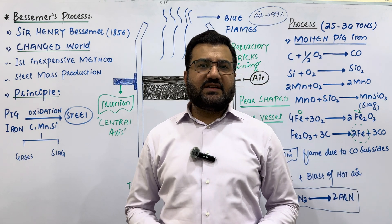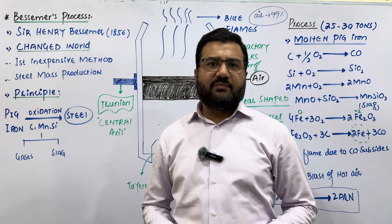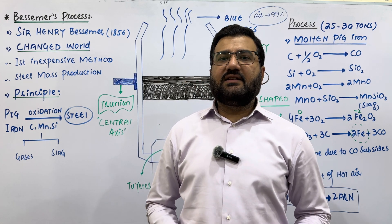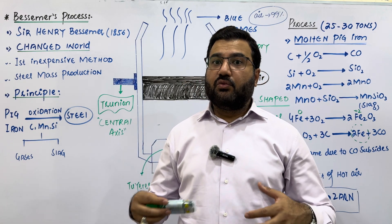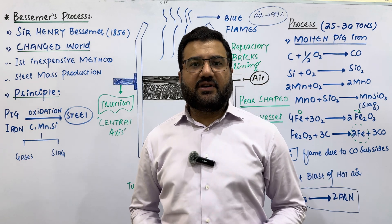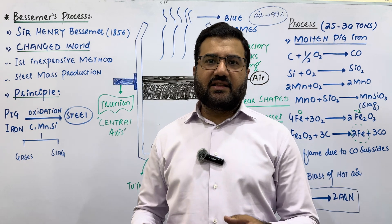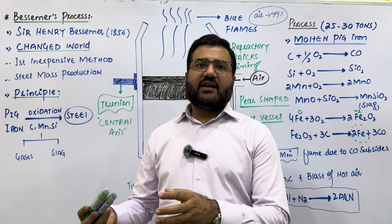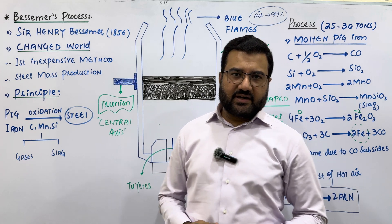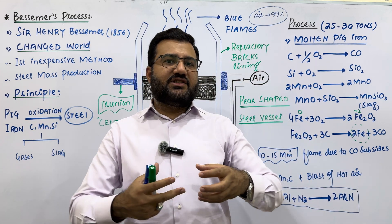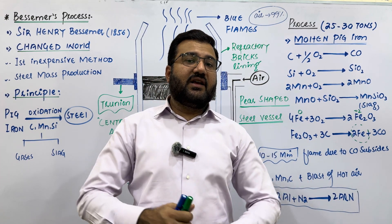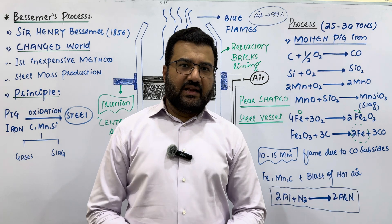In the 1990s, the open-hearth process was also terminated because it was a very slow process, and new, more effective and faster furnaces were introduced — like the basic oxygen furnace and the electric arc furnace. These are the furnaces which are now used in modern times for the manufacturing of steel.